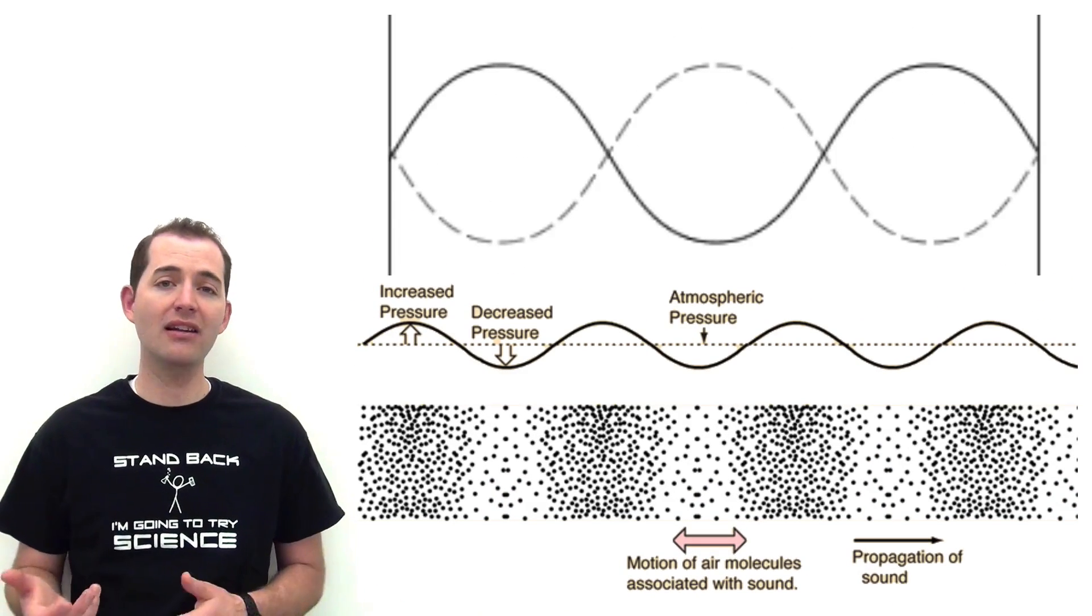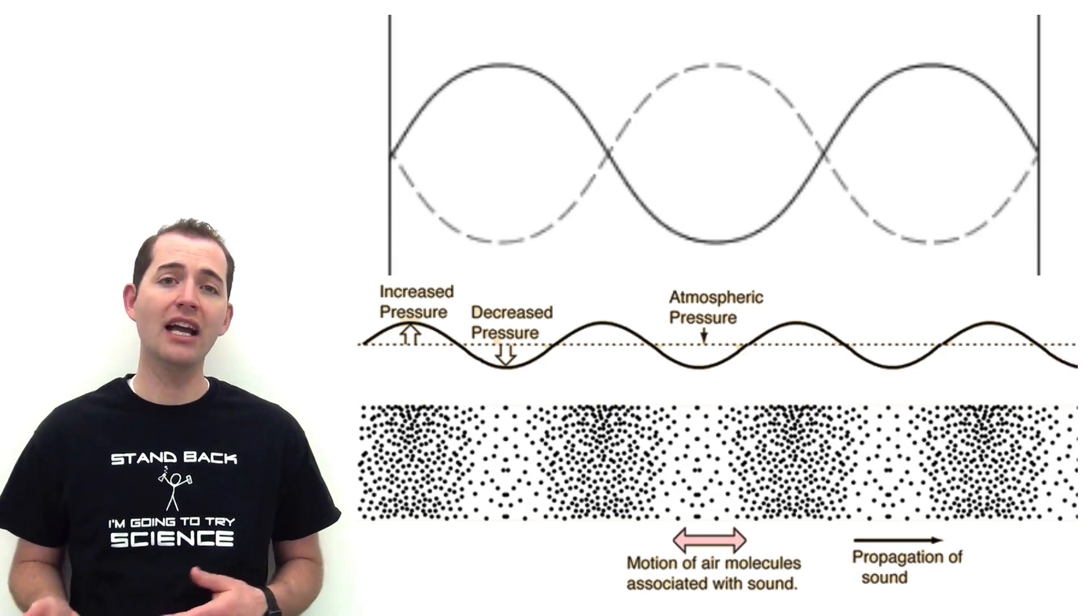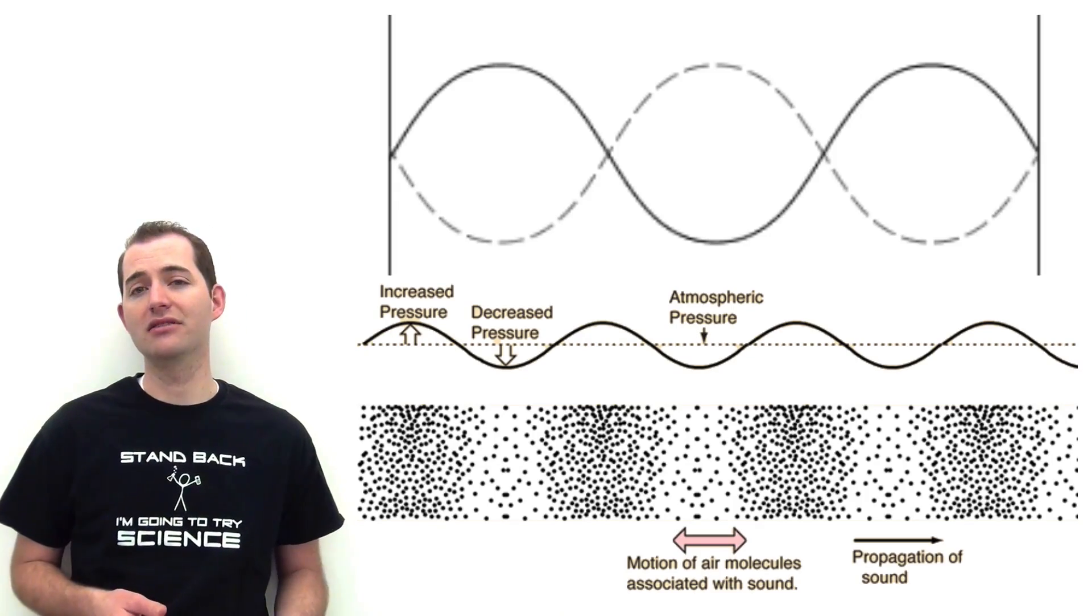And we can see how there are parallels between rarefication and compression and nodes and antinodes.